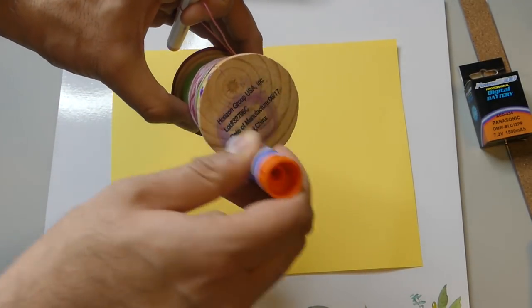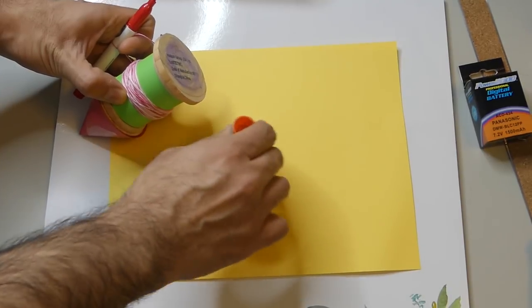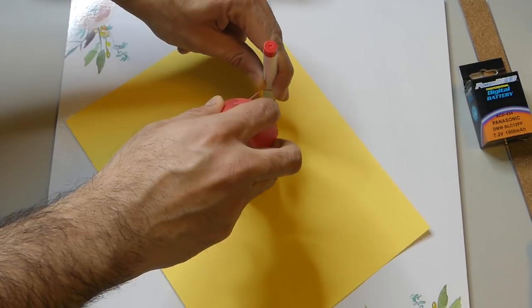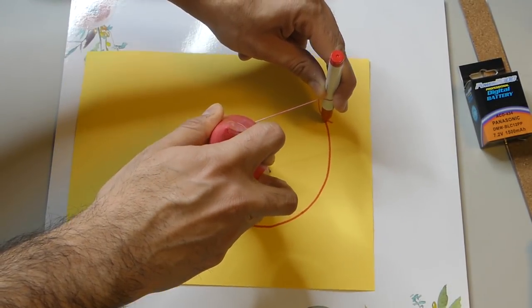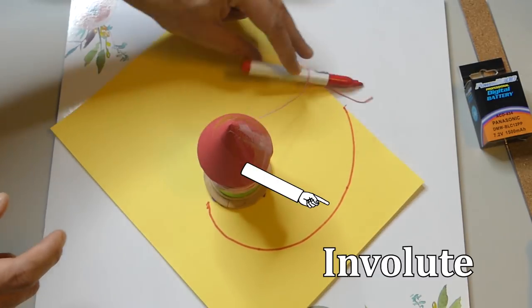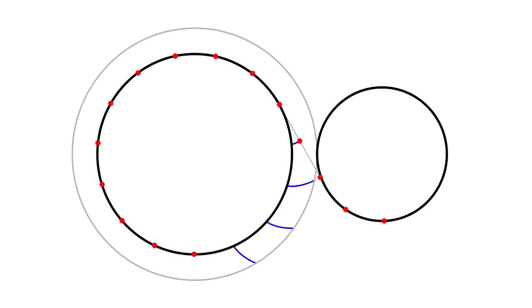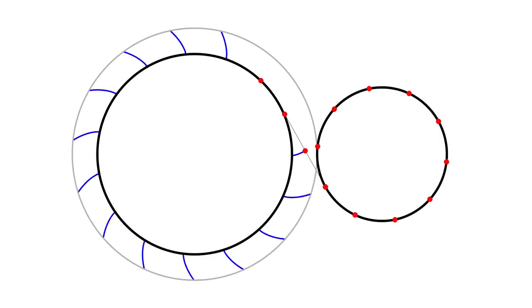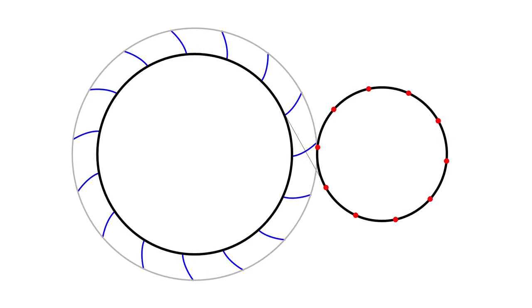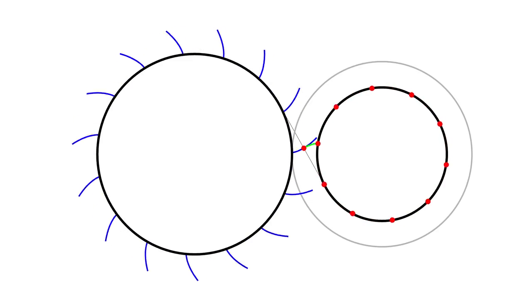First, imagine you are unlooping string from a roll tautly — then the curve that the tip of the string traces out is called an involute. We are interested in involutes because you can use them to draw perfectly meshing gear teeth. So let's say you start with two gears of two different sizes and you don't know how to draw the teeth yet — what you do is draw evenly spaced involutes coming off of the first gear, depending on however many teeth you want, and then do the same thing coming off of the second gear.